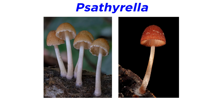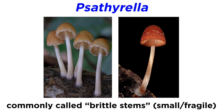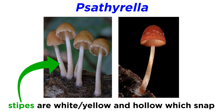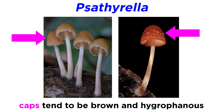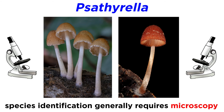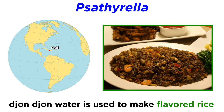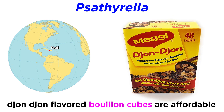Our next genus in the family Psathyrellaceae is Psathyrella, commonly called the brittle stems. These mushrooms are small and fragile. They produce black to brown spores and do not liquefy like the aforementioned genera. The stipes are whitish to yellow and hollow on the inside, allowing them to have a satisfying snap. The caps are generally brown and oftentimes hygrophanous, meaning the caps change color as they lose moisture. Identification on the species level generally requires microscopy. In Haitian tradition, species of Psathyrella are highly valued as a delicacy — called John John, the caps are served at important events such as baptisms and weddings. John John is generally boiled and strained, and the cooking water is used to flavor rice. Because these mushrooms can be quite expensive and rare, John John-flavored bouillon cubes are commonly used as a replacement.